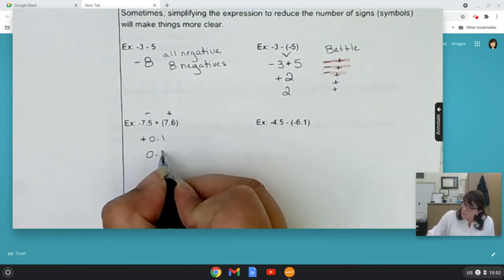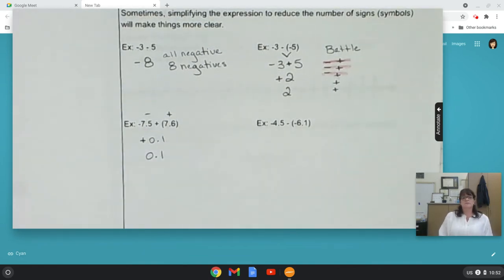So, my answer is 1 tenth. And we think, oh, that's not that important. Well, it is if it's 1 tenth of a million dollars. So, those numbers are still important.